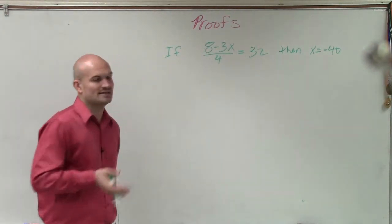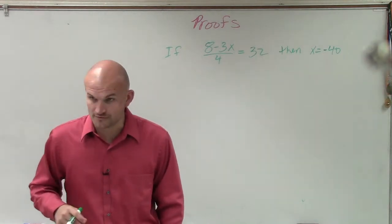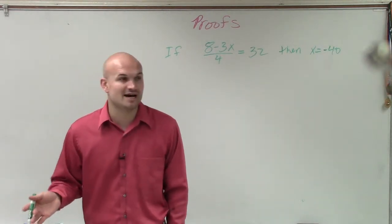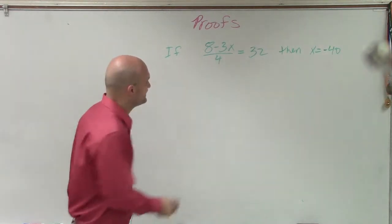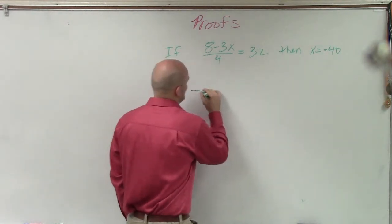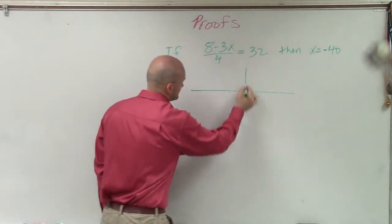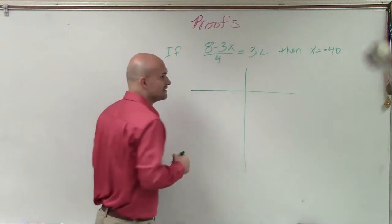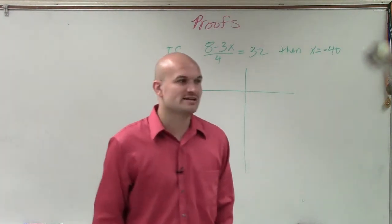So what we're going to be using for these algebraic proofs is what we call a two-column proof. So to write a two-column proof, we have to have two columns. There you go. So I'm going to create two different columns, and I'm going to have a heading for each column.